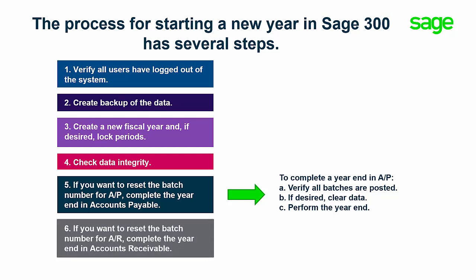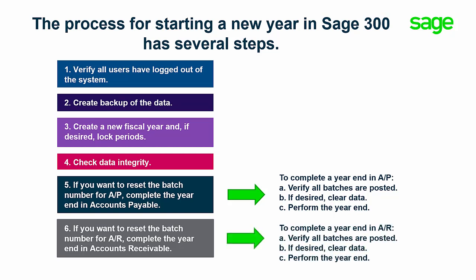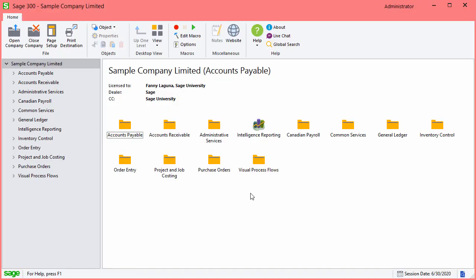If you want to reset the batch numbers for Accounts Receivable, you need to complete a year-end in AR after posting all the transactions to the current year and before starting to post transactions for the new year. To complete a year-end in AR, verify all batches are posted, if desired clear data, and perform the year-end.